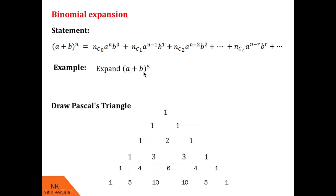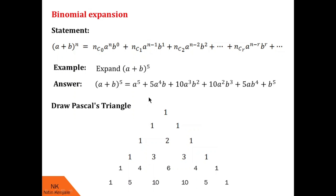The first term of (a+b)^5 is 1·a^5. The second term is 5·a⁴b. Then, decreasing the degree of a and increasing the degree of b each time: 10·a³b², then 10·a²b³, then 5·ab⁴, and finally 1·b^5. The coefficients from Pascal's triangle are 1, 5, 10, 10, 5, 1.